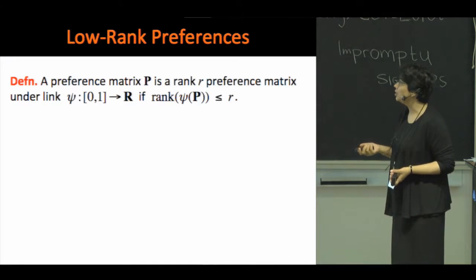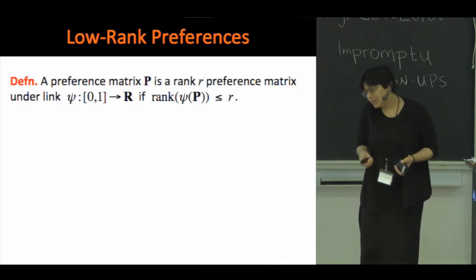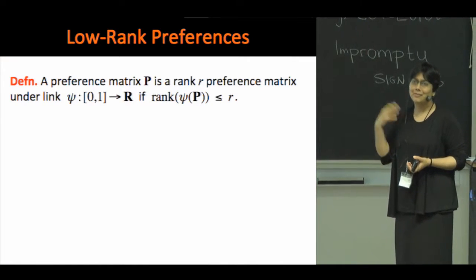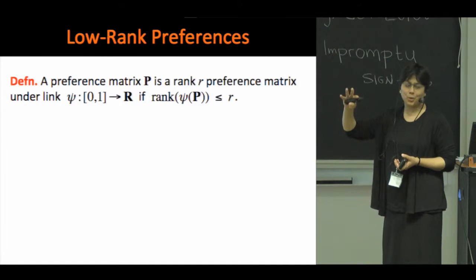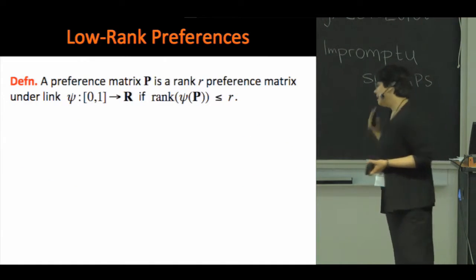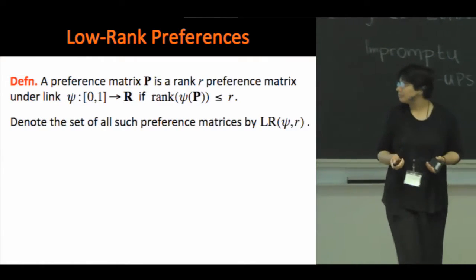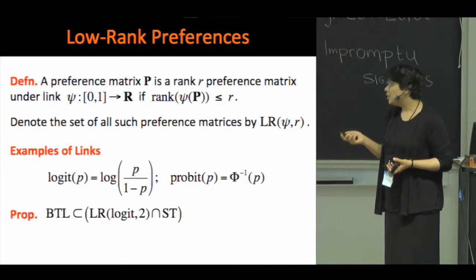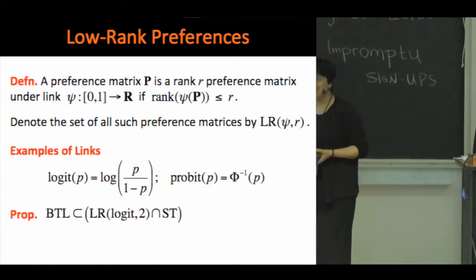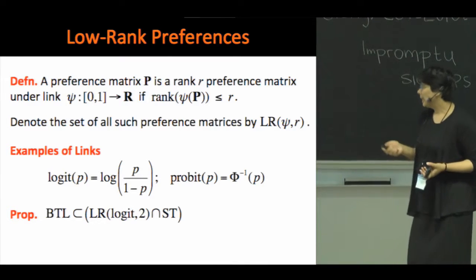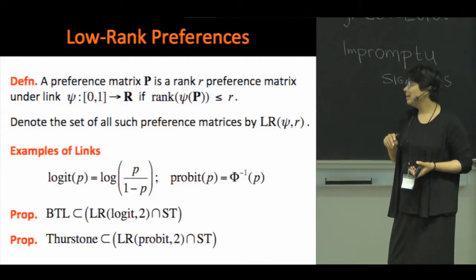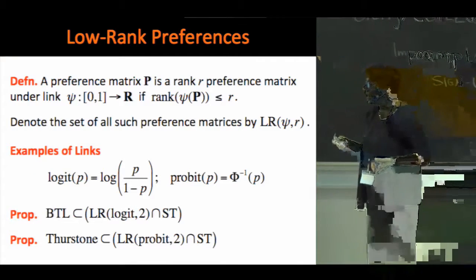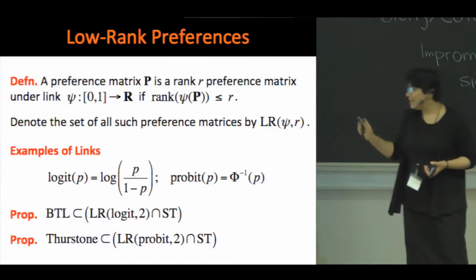Let me walk through the definition and main results. A preference matrix P may not be low rank itself. We say it has rank R under a link function, where a link function is a strictly increasing function mapping probabilities in (0,1) to the real line, and the transformed matrix has rank R. Common examples are the logit and probit links. The BTL model is a special case — it always has rank 2 under the logit link. Similarly, the Thurstone model, also widely studied in statistics, has rank 2 under the probit link. Many more general models can be considered as well, with characterizations detailed in the paper.